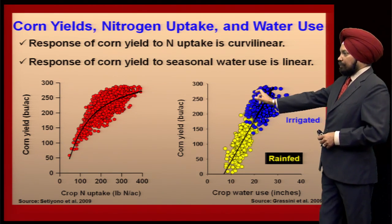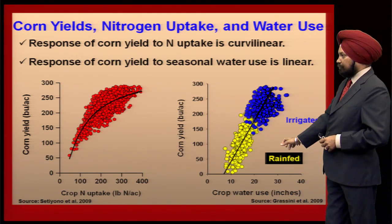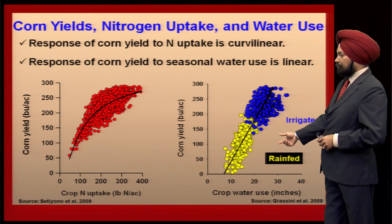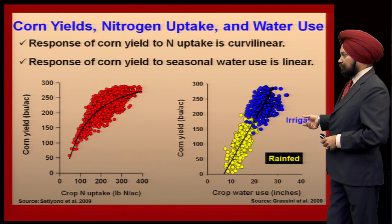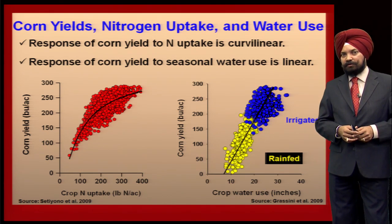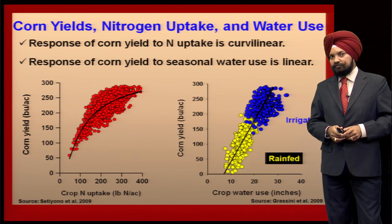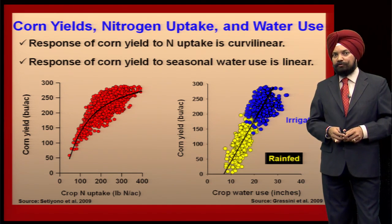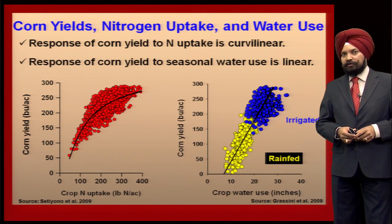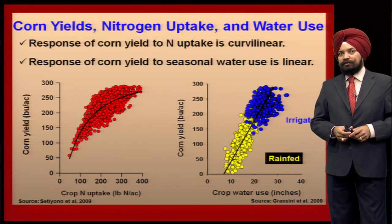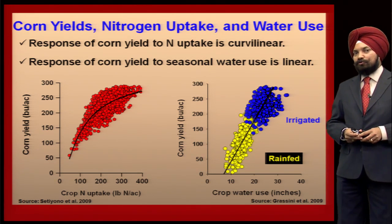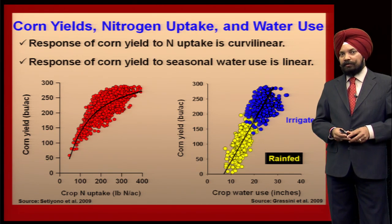On the second graph I am showing corn yield on the y-axis and crop water use on the x-axis. There are yellow dots representing rain-fed fields and blue dots representing irrigated fields, and we can see that corn yield increases linearly with the increase of crop water use. The bottom line from these two graphs is that in order to achieve high corn yield, the crop has to absorb a lot of water and nitrogen, and that requirement needs to be met through nitrogen fertilizer and irrigation, but the challenge is how to meet that demand without making any environmental impact.